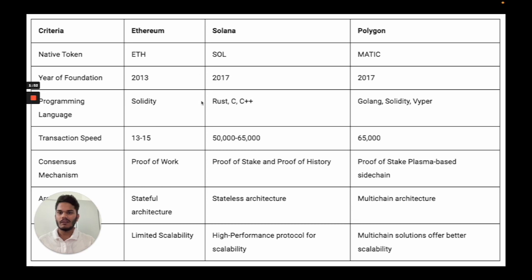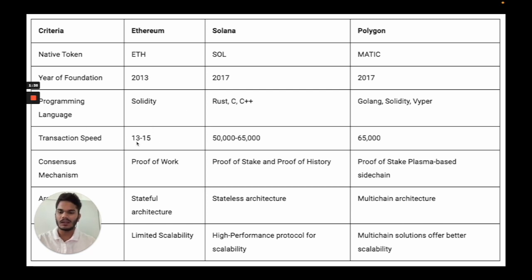Here is the theoretical data of Ethereum, Solana, and Polygon. Ethereum can do around 13 to 15 transactions per second, Solana can do 50,000 to 65,000, and Polygon can do 65,000.